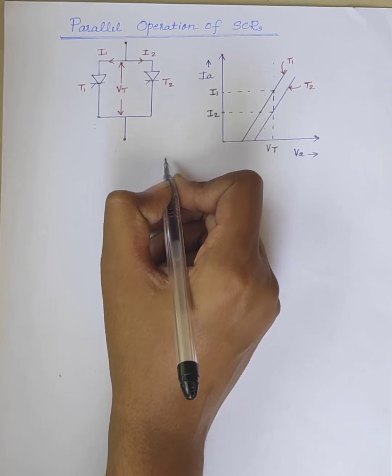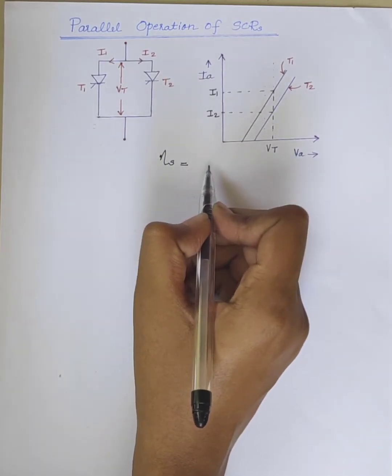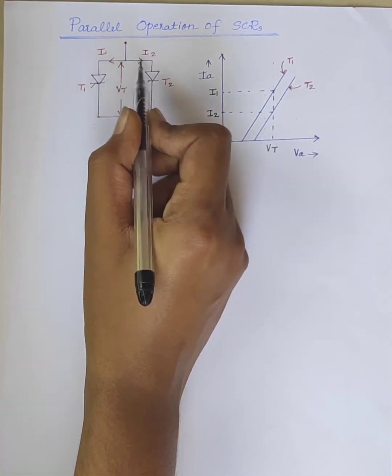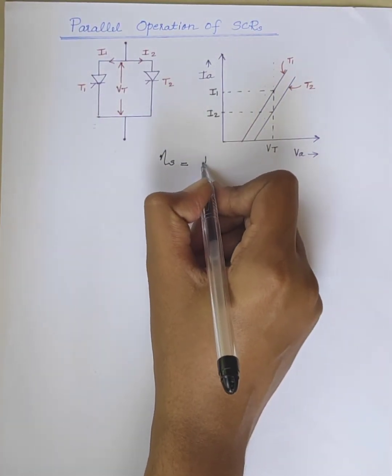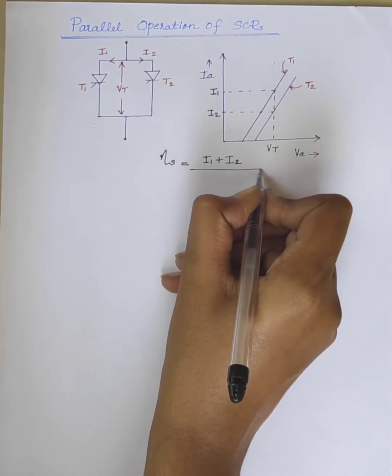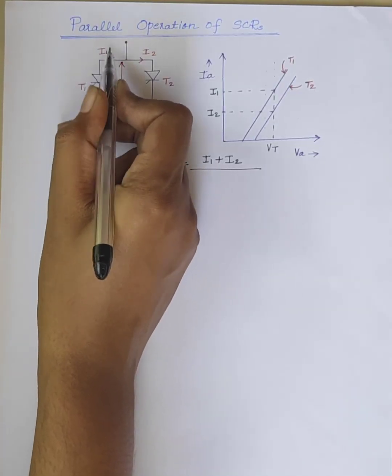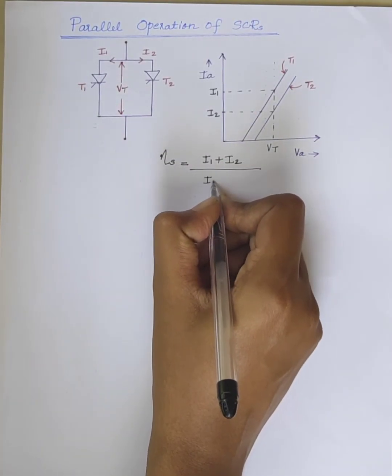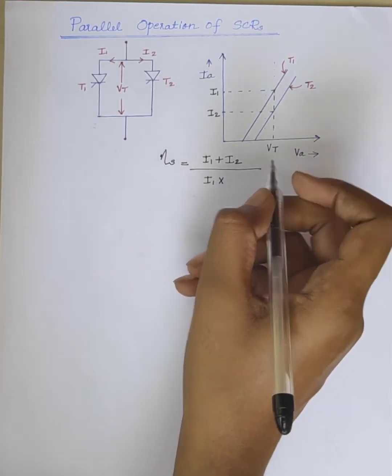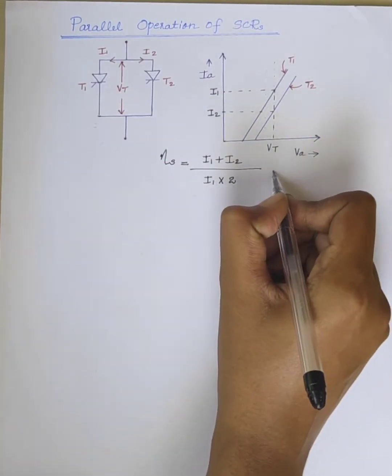We can write the string efficiency eta S equals the actual current rating of the whole string, which is I1 plus I2, divided by individual current rating of one string. Here we are taking I1 times the number of SCRs in the string, which is 2.